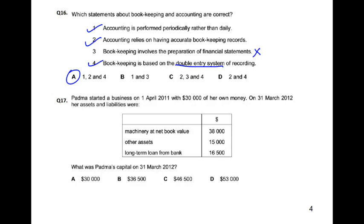What was Padma's capital on 31st March? We need to find the closing capital. Capital comes from: assets minus liabilities equals capital. The opening capital of 30,000 is not relevant here — it is given to confuse us.